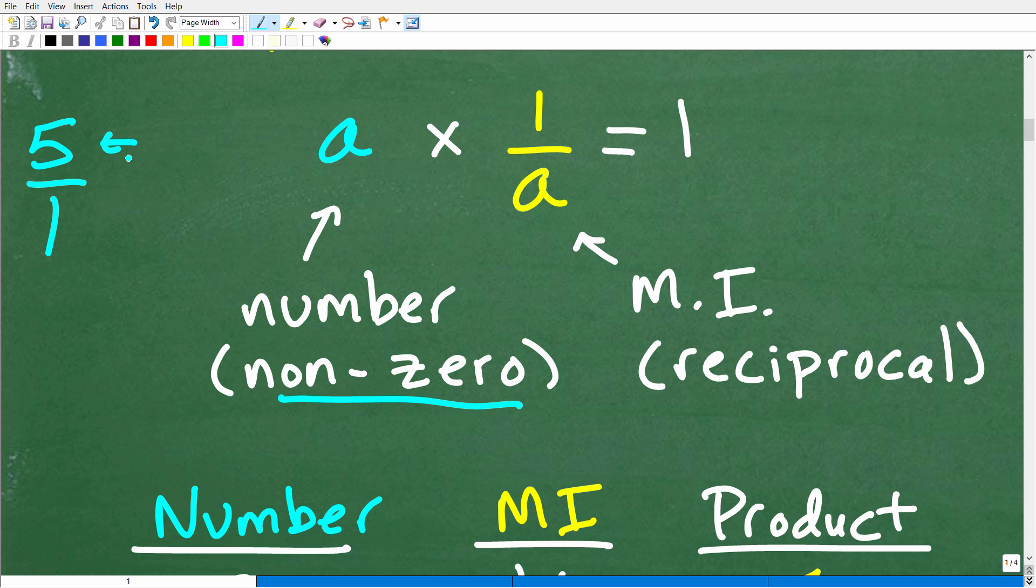Well, we can always think of a number or a variable as a fraction by just putting it over one. So, here we have a numerator of five and a denominator of one. Now, if we have the variable A, we can think of that as a fraction by just having A over one. And that's important because when we have a variable or a number, we can find something called its multiplicative inverse, and that is effectively the reciprocal. Okay, and the reciprocal is where we just flip a fraction upside down.